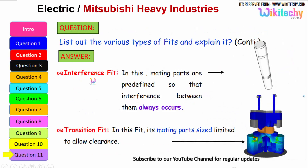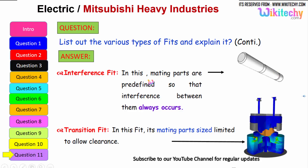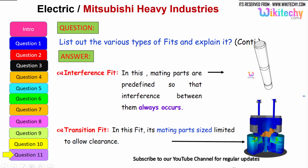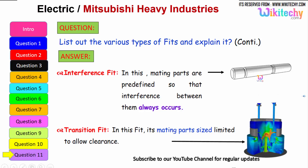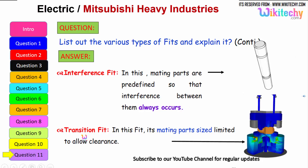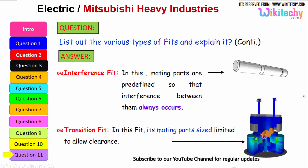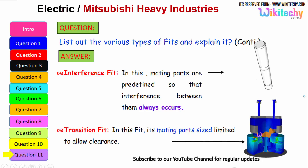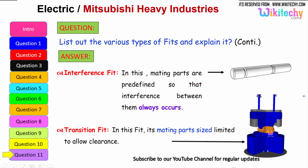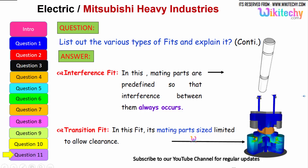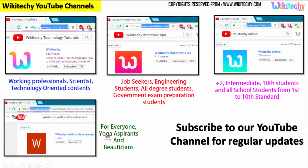In interference fit, the mating parts are predefined so that interference between them always occurs. The final one is transition fit — in this fit, the mating parts' sizes are limited to a low clearance, and you should not have an exact fitting. That is your transition fit.